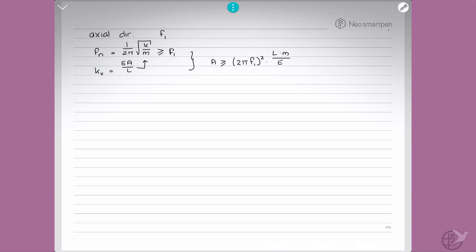Now, the cross-sectional area of a cylinder is equal to 2πrt. And if we substitute that in there and rework that for t, what we find is that our minimum required wall thickness must be larger or equal to 2π times f1 squared mL over Er.